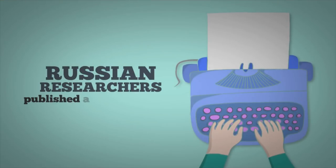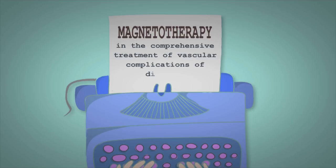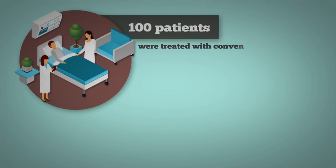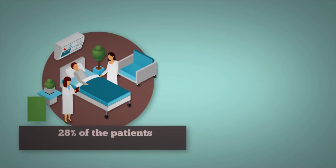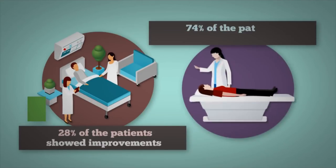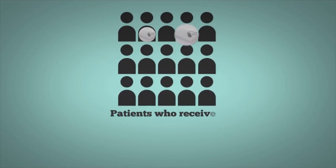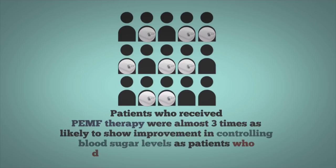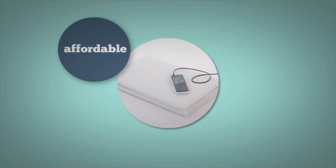Russian researchers published an article in 1996 called Magnetotherapy, in the comprehensive treatment of vascular complications of diabetes. They studied 420 patients with diabetes. 100 of these patients were treated with conventional therapy, while 320 of them were exposed to a pulsed magnetic field in addition to conventional therapy. 28% of the patients in the control group showed improvements, while 74% of the patients who were treated with the pulsed magnetic field showed improvements. In other words, patients who received PEMF therapy were almost three times as likely to show improvement in controlling blood sugar levels as patients who didn't receive PEMF therapy. The good news is that PEMF therapy has recently become affordable, and is now readily available.